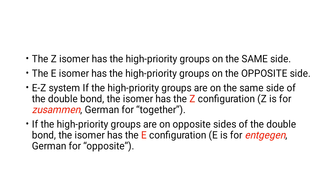To summarize: if the higher-priority groups are on the same side of the double bond, the isomer has Z configuration (Z = zusammen, German for 'together'). If the higher-priority groups are on the opposite side of the double bond, the isomer has E configuration (E = entgegen, German for 'opposite').